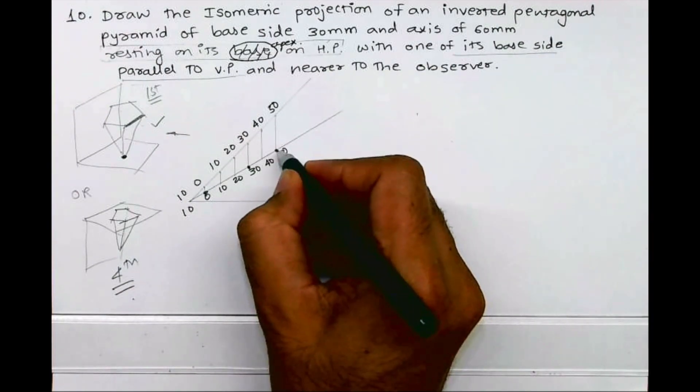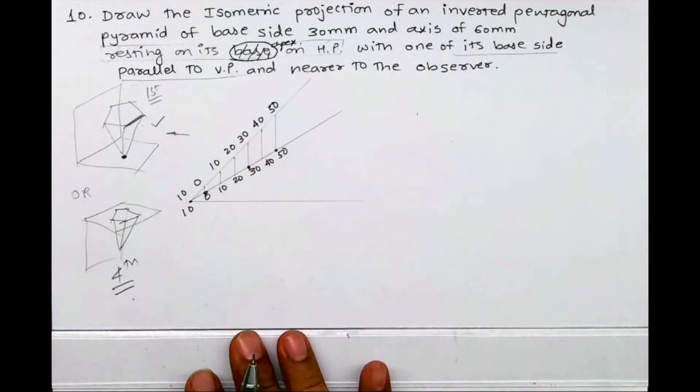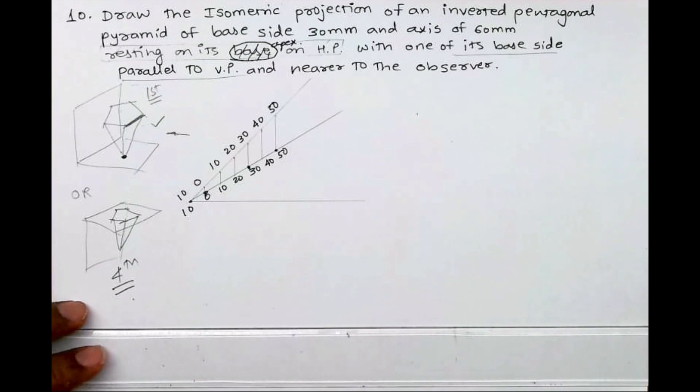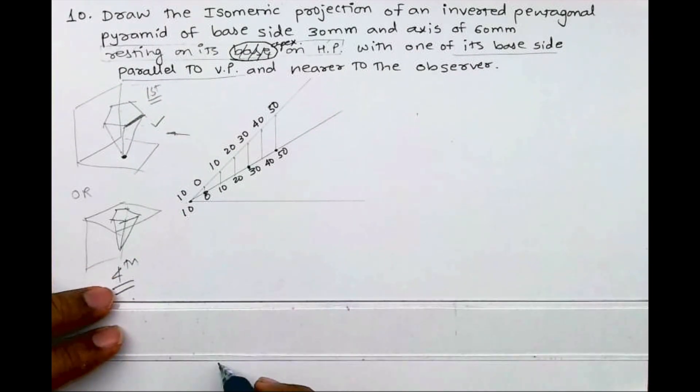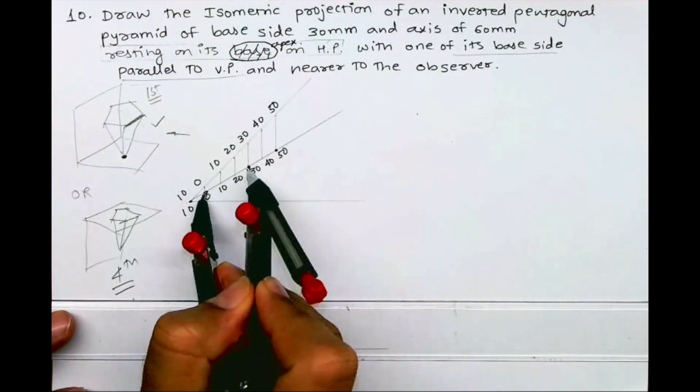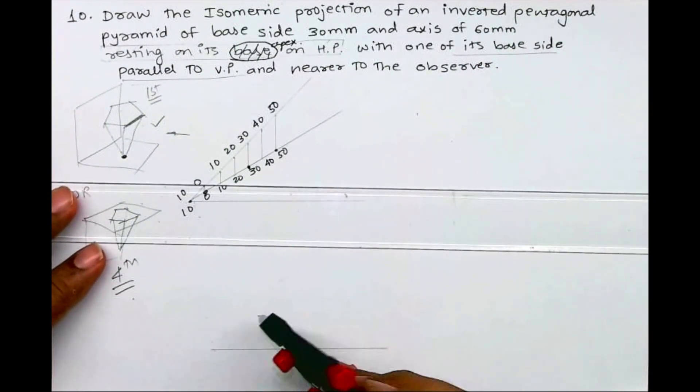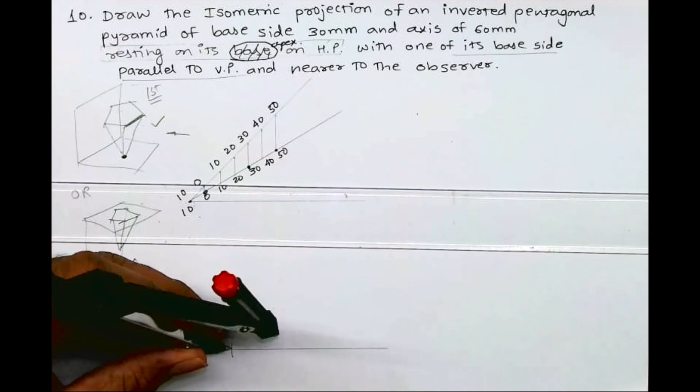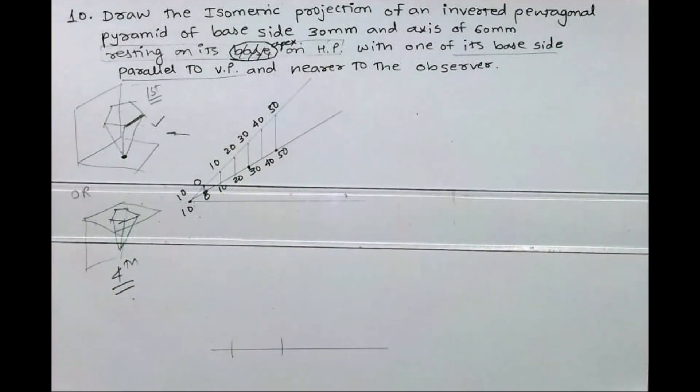So this is 0 to 30 and this is 50 plus 10, which equals 60. First we will draw horizontal line, mark distance 30 and we'll draw pentagon over there. Now all of you know how to draw pentagon with 54 degree method, so we'll draw pentagon by 54 degree method.